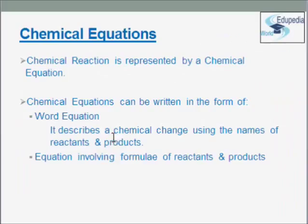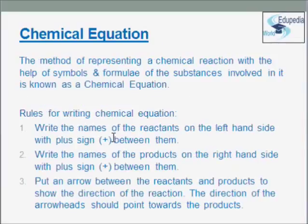Now let us discuss about chemical equations. A chemical reaction is represented by a chemical equation. Chemical equations can generally be written in the form of a word equation or equations involving formulae of reactants and products. We generally prefer writing the chemical formulae of reactants and products because it is simpler and more concise. A chemical equation is a method of representing a chemical reaction with the help of symbols and formulae of substances involved in it. There are certain rules for writing a chemical equation.